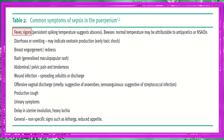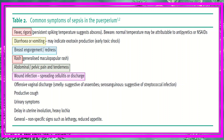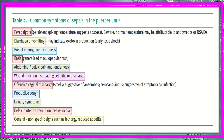Common symptoms of sepsis in the puerperium include fever and rigors, diarrhea and vomiting indicating exotoxin production, breast engorgement and tenderness, generalized macular papular rash, abdominal or pelvic pain and tenderness, wound infection, spreading cellulitis, offensive vaginal discharge, productive cough, urinary symptoms, delay in uterine involution, heavy lochia, lethargy, and reduced appetite.